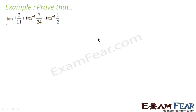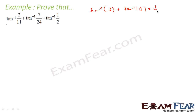It says tan inverse 2 by 11 plus tan inverse 7 by 24 is equal to tan inverse 1 by 2. It's very straightforward. We have the formula tan inverse a plus tan inverse b, and we have used this formula before. The formula says tan inverse a plus tan inverse b is nothing but tan inverse of (a plus b) by (1 minus ab).